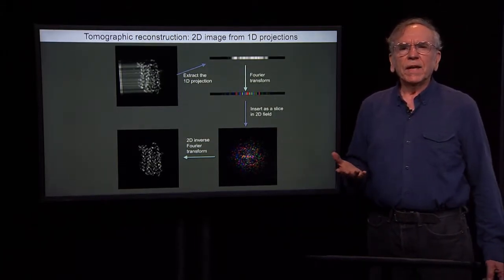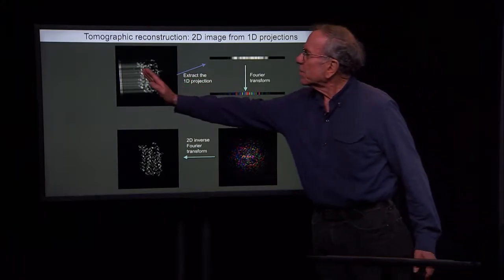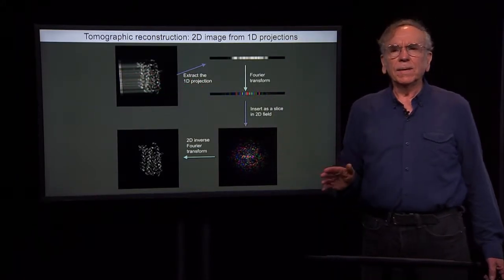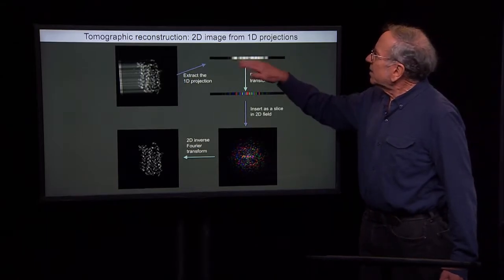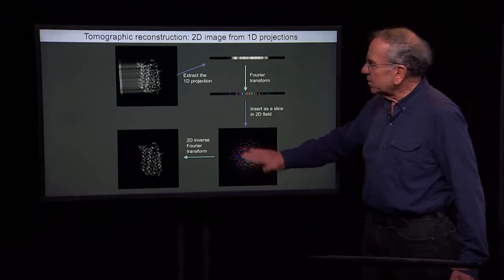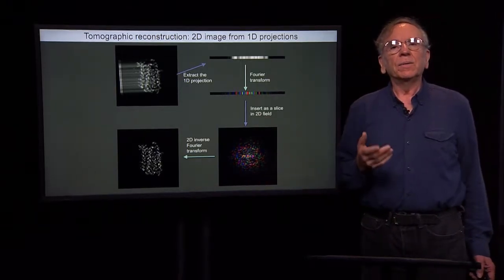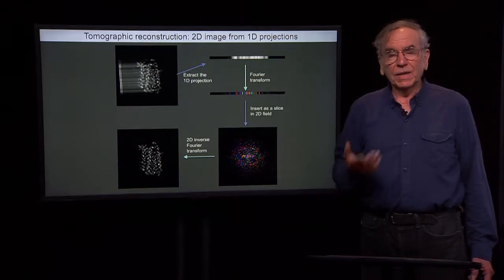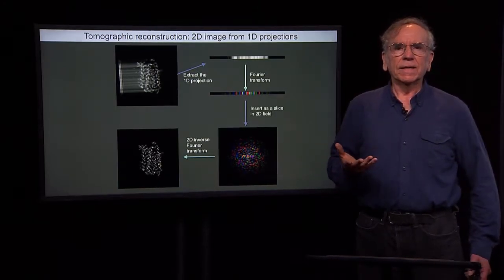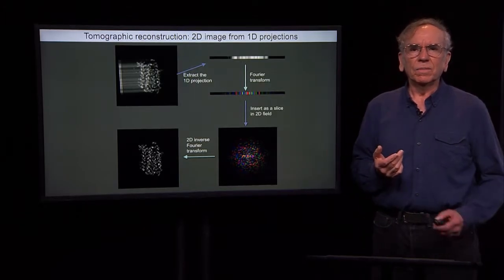We can do this in three dimensions as well. In that case, the projection is a two-dimensional image. This is a two-dimensional Fourier transform, and what we are doing is we will be inserting slices into a 3D Fourier volume. And if we insert a complete set of slices, then we can get a three-dimensional reconstruction.